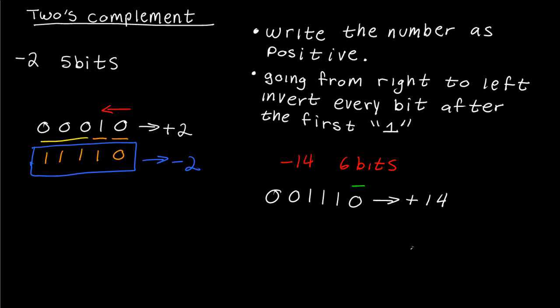Now going from right to left, I have a zero, that one stays the same. I have a one, that one stays the same. Every number after that gets inverted, so for this one I have 0-0-1-1. And this is my negative 14 using two's complement with six bits.